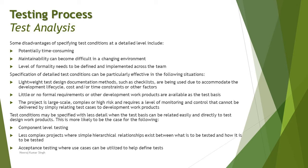Detailed conditions are recommended when little or no formal requirements or other development work products are available as the test basis. For example, in agile methodologies, user stories are very brief — to the point — but may not have all detailed information. If your test basis — requirements, architecture, control flows, or use cases — are very brief, you need something detailed for the testing team to refer to. Additionally, detailed conditions are recommended when the project is large-scale, complex, or high-risk, as every corner of the product must be tested thoroughly.